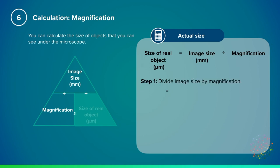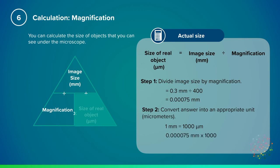First of all, we need to divide the image size given in the question as 0.3 mm by the magnification times 400, which gives us an answer of 0.00075 mm. But we need to give our answer now in micrometers. So, converting this, we need to know that there is 1 mm to every 1,000 micrometers. So, we will times our answer by 1,000 to get our answer in micrometers of 0.75 micrometers.